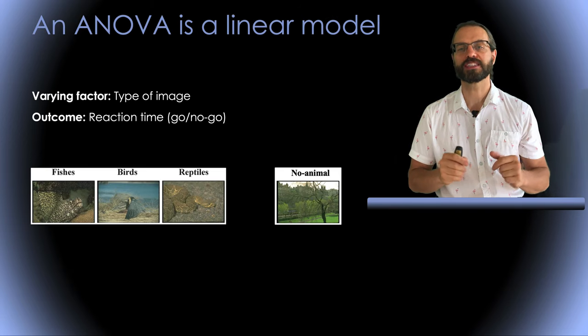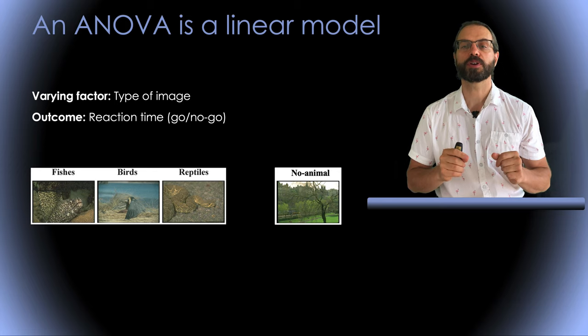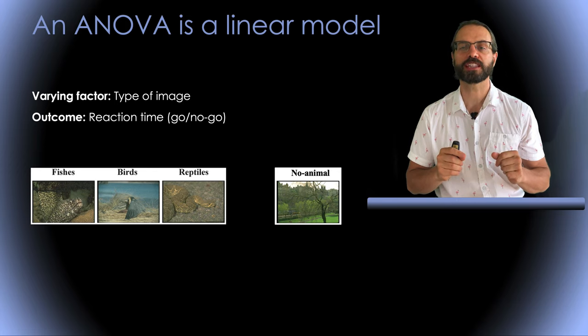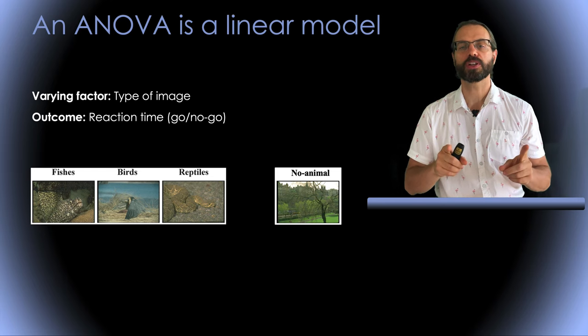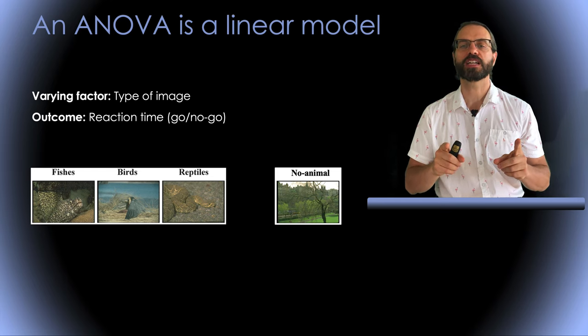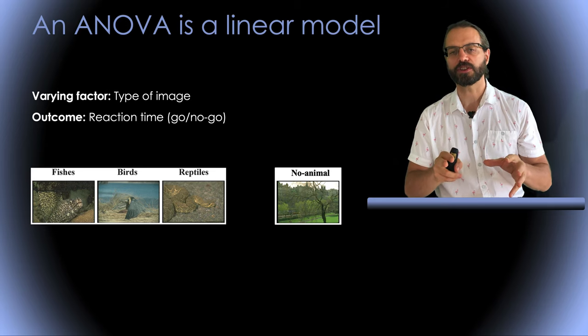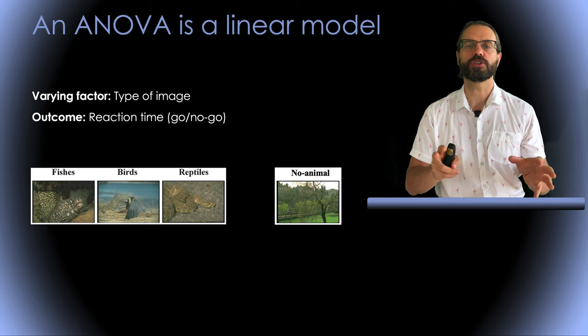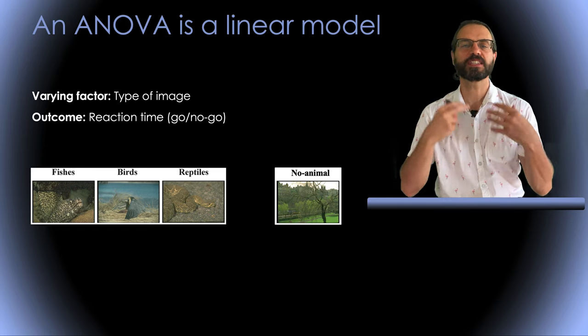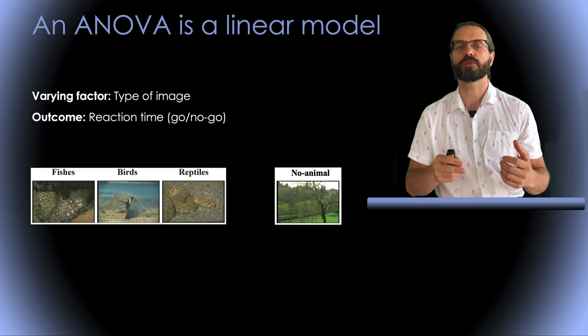Now an ANOVA is also a linear model. Imagine an experiment where you would have three categories of images containing an animal. You would still respond only when the image contains an animal but now we want to know if people respond faster on images of reptiles than on images of fishes or birds. For example there might be an instinctive response to be faster to move when we see a snake or another reptile.